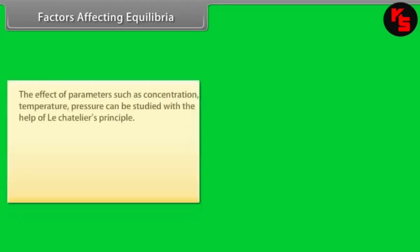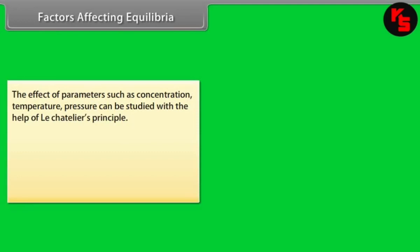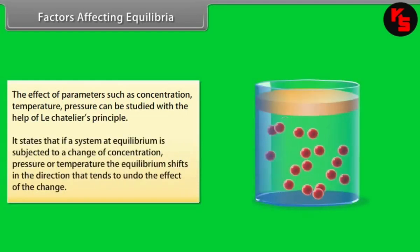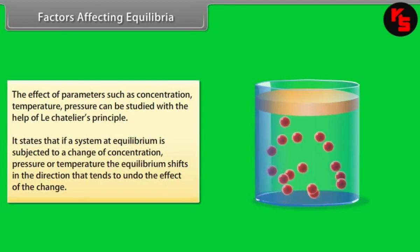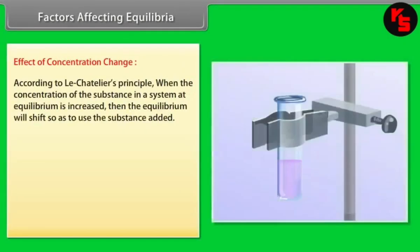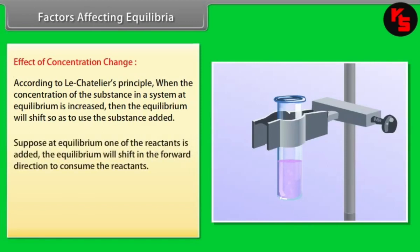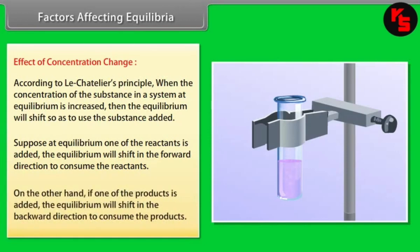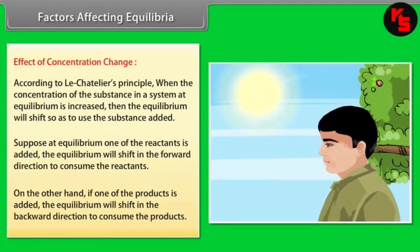Factors Affecting Equilibria. The effect of concentration, temperature, and pressure can be studied using Le Chatelier's principle, which states that if a system at equilibrium is subjected to a change of concentration, pressure, or temperature, the equilibrium shifts in the direction that tends to undo the effect of the change. Effect of concentration change: when the concentration of a substance is increased, the equilibrium shifts to consume the added substance. For example, on a humid day we sweat more because the surrounding air has a large amount of water vapor.